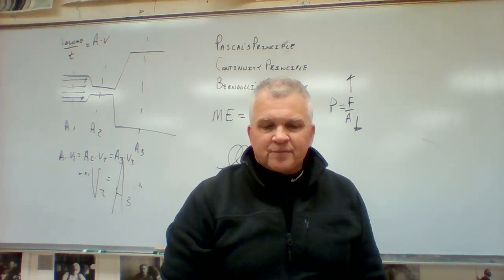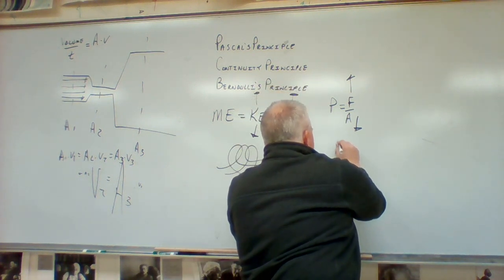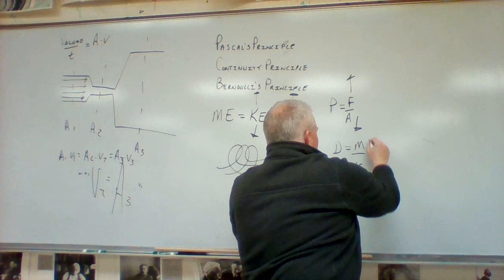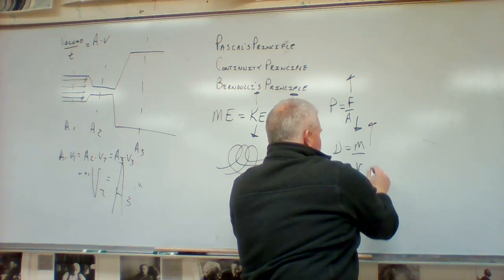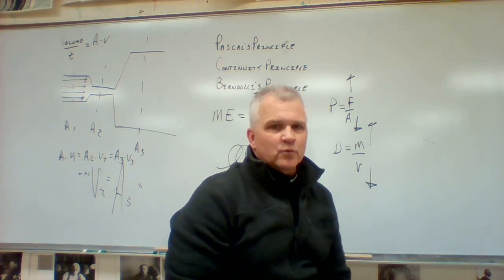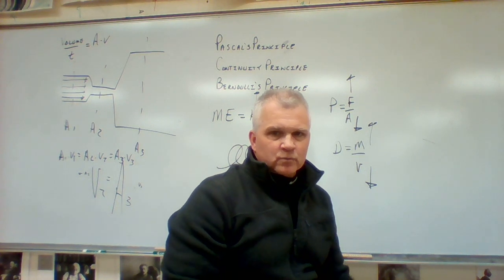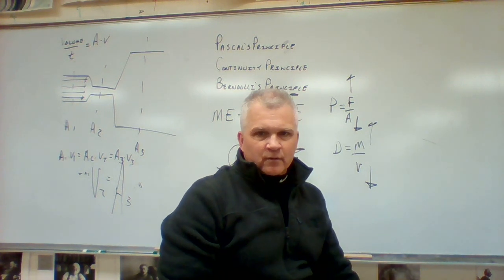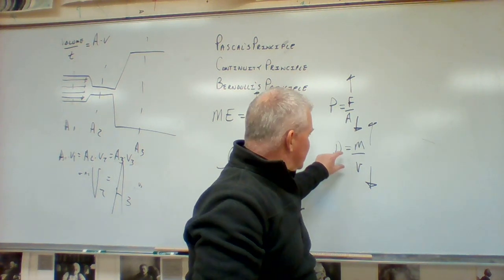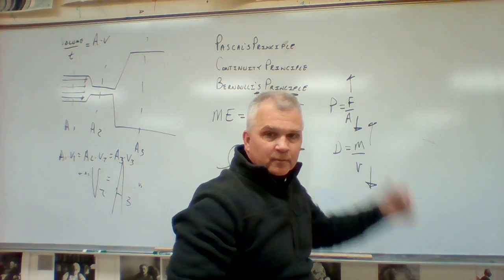Number five: to increase density, density equals mass divided by volume, so you could increase the mass or decrease the volume. How do we get a hot air balloon to float? We heat the air up, which decreases the density of the air inside, making it less dense than the surrounding cold air.